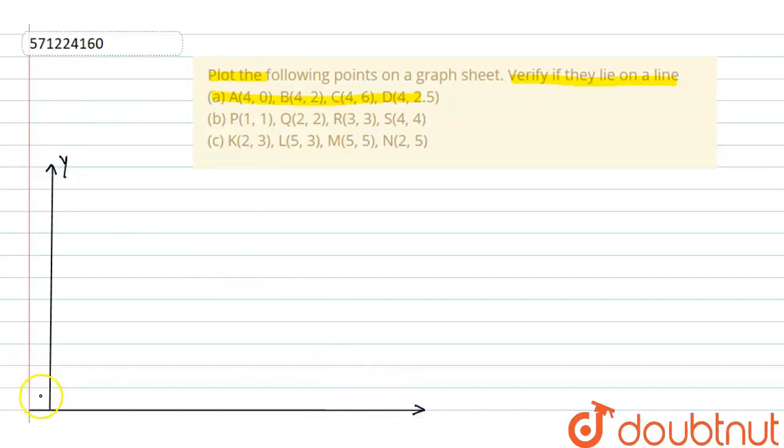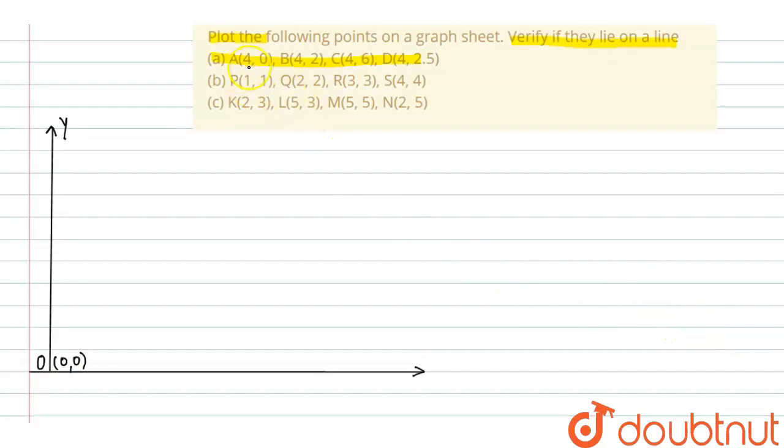And second thing is, this is the point of origin whose coordinates are 0 and 0. As we know, always the first coordinate is for x-axis, second is for y.